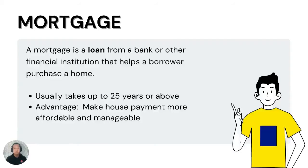First off, what is a mortgage? A mortgage is a kind of loan that a borrower gets from a financial institution that helps them to purchase a house. This mortgage usually takes about 25 years or more, and the advantage the borrower can get is that it will ease them financially and the house payment is manageable for them.